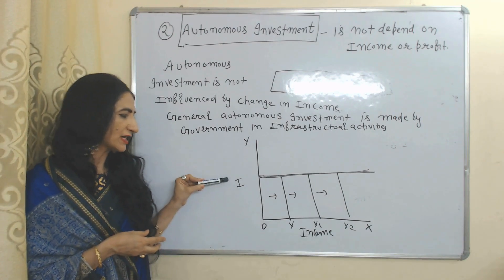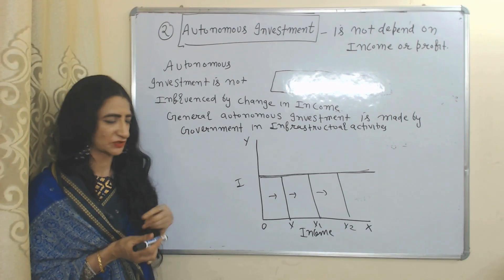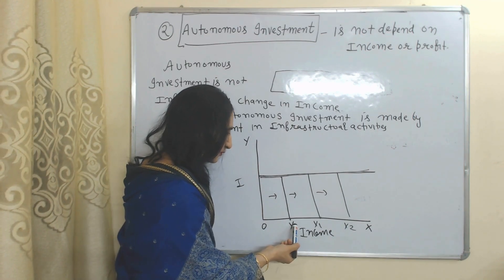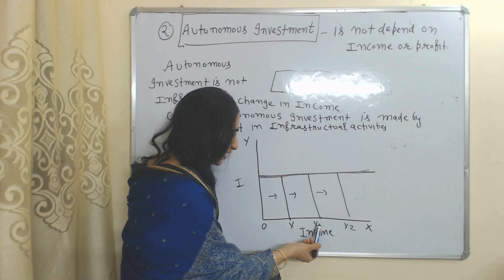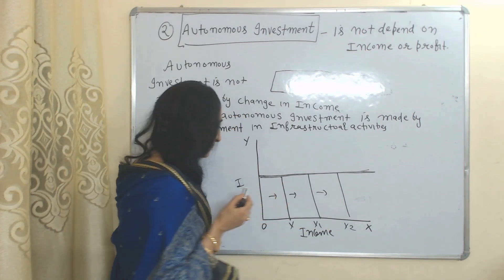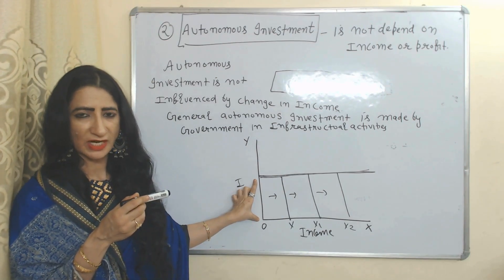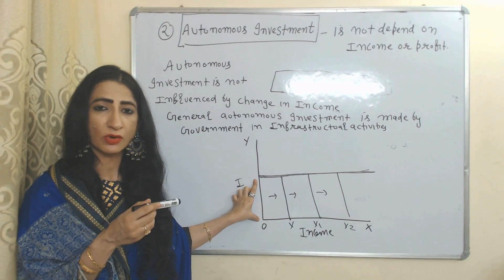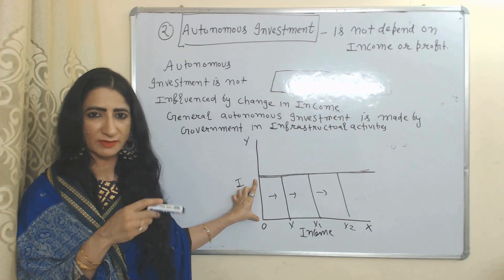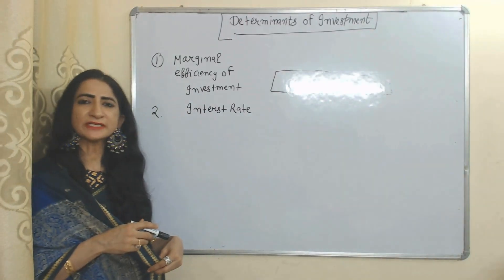On the x-axis we have income, on the y-axis we have autonomous investment. You can see that income is increasing from Y1 to Y2, but autonomous investment remains constant, because autonomous investment is not influenced by changes in income.